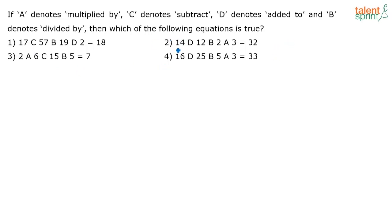If you see the correct answer, you will get it as option 2. So what does option 2 say? 14 D 12. What is D? D is nothing but added to, and B is nothing but divided by 2, and A is nothing but multiplied by 3. That is equal to.